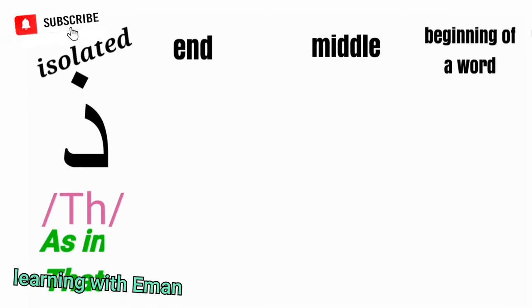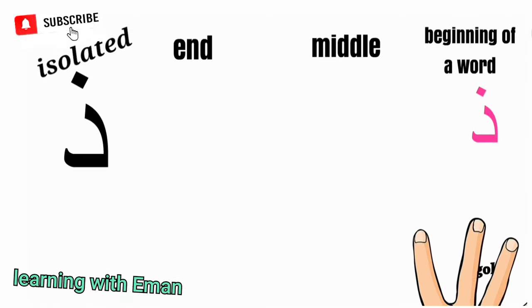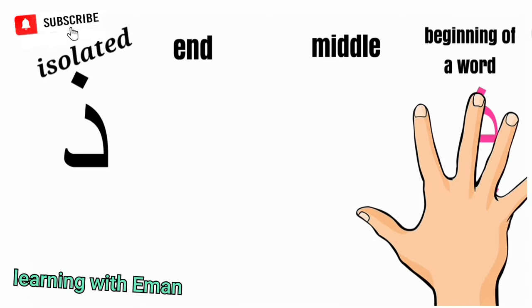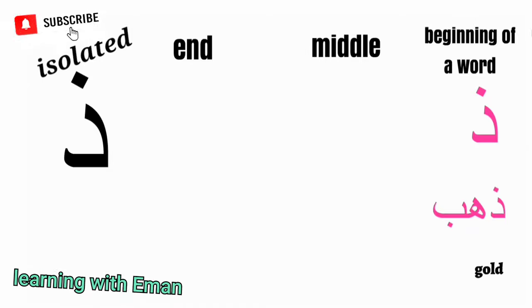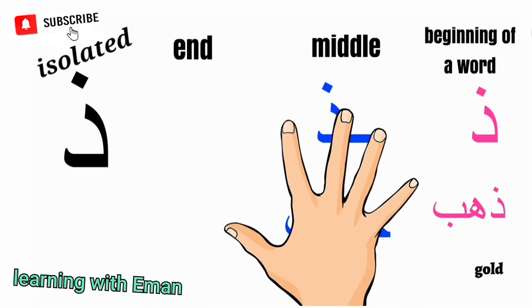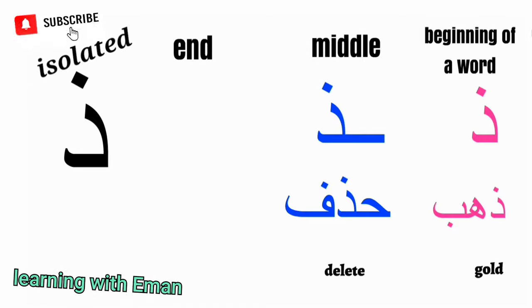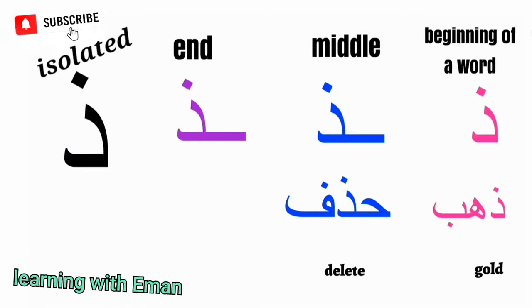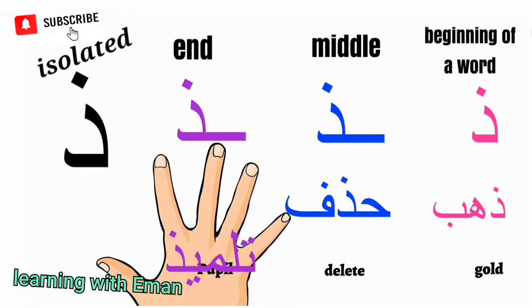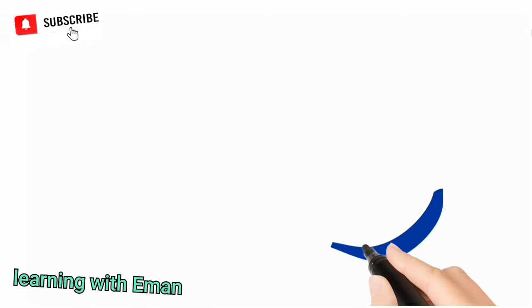Dhal sounds like the TH as in 'that'. At the beginning of a word, like in a word meaning gold. At the middle of a word, like in a word meaning delete. At the end of a word, like in a word meaning pupil.